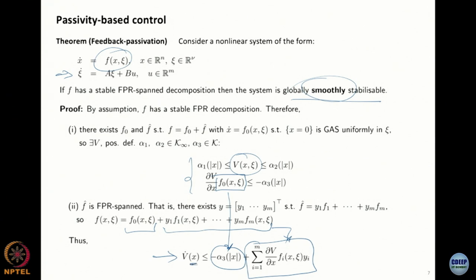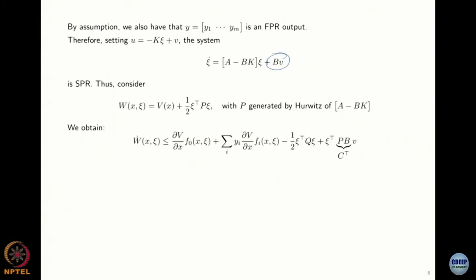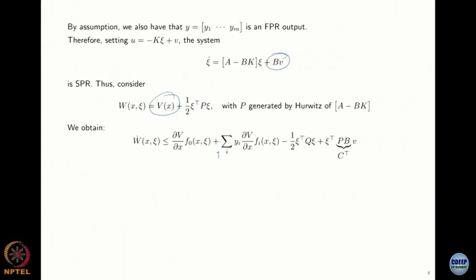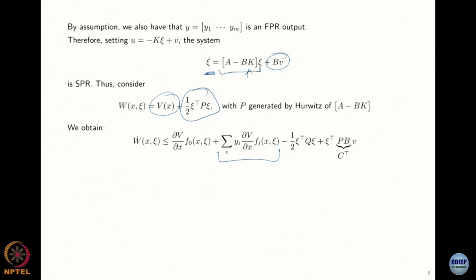All you have to do is add to your Lyapunov function — the one you had for f-zero, which is also a function of xi — a quadratic Lyapunov function in xi, the state of the lower subsystem. When you take the derivative of that quadratic term, because you designed K so that A minus BK is Hurwitz, that matrix generates a P such that you take the derivative of V plus this new quadratic term.